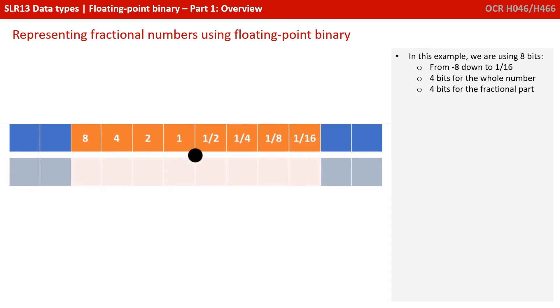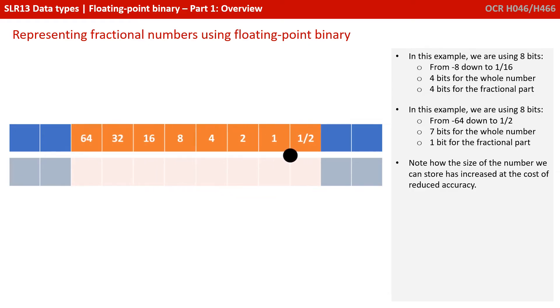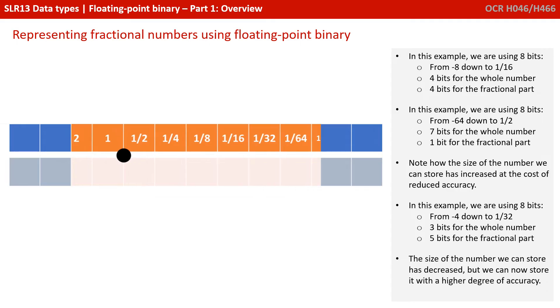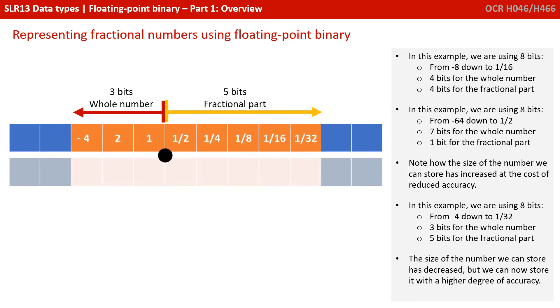In this example, we're using 8 bits from minus 8 to 1/16th, 4 bits for the whole number and 4 bits for the fractional component. In this example, we're still using 8 bits, but this time the numbers from minus 64 down to a half. So we're using 7 bits for the whole number and only 1 bit for the fractional part. Note how the size of the number we can store has increased, but that's at the cost of reduced accuracy. And in this example, we're still using 8 bits from minus 4, but this time all the way down to 1/32nd. That's 3 bits for the whole number and a whole 5 bits for the fractional part. So the size of the number we can store has now really decreased, but we can now store it with a much higher degree of accuracy or precision.